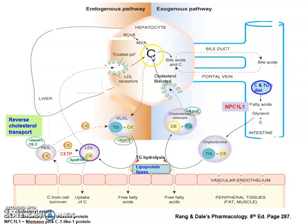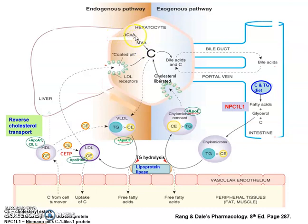This cholesterol can also enter the endogenous pathway. Cholesterol from the exogenous pathway can enter the endogenous pathway, but the endogenous pathway also involves the synthesis of cholesterol, starting with acetyl-CoA plus acetoacetyl-CoA making HMG-CoA, which is then converted into mevalonate.